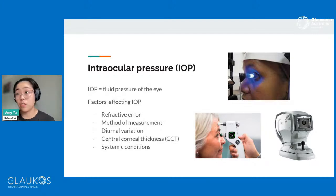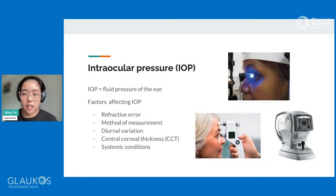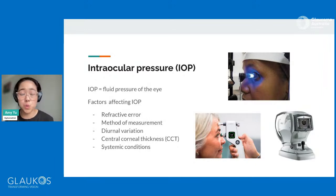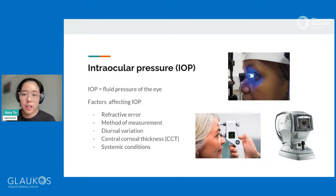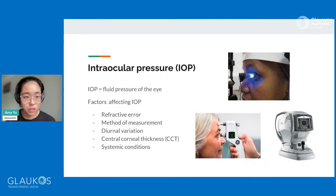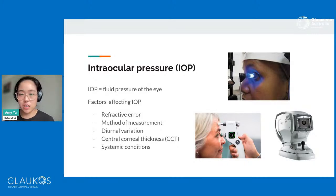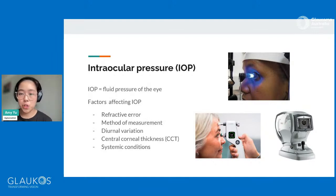Eye pressure can be affected by a few things. Things like refractive error, which means your prescription. So if you are short-sighted, you automatically have smaller eyeballs, which can artificially increase the eye pressure. The other thing that can affect eye pressure is also the way that it's measured — so the method of measurement. You probably all remember the air puff machine, the dreaded air puff. The air puff machine is the easiest way of measuring eye pressure in a busy practice setting, and it's called non-contact tonometry.